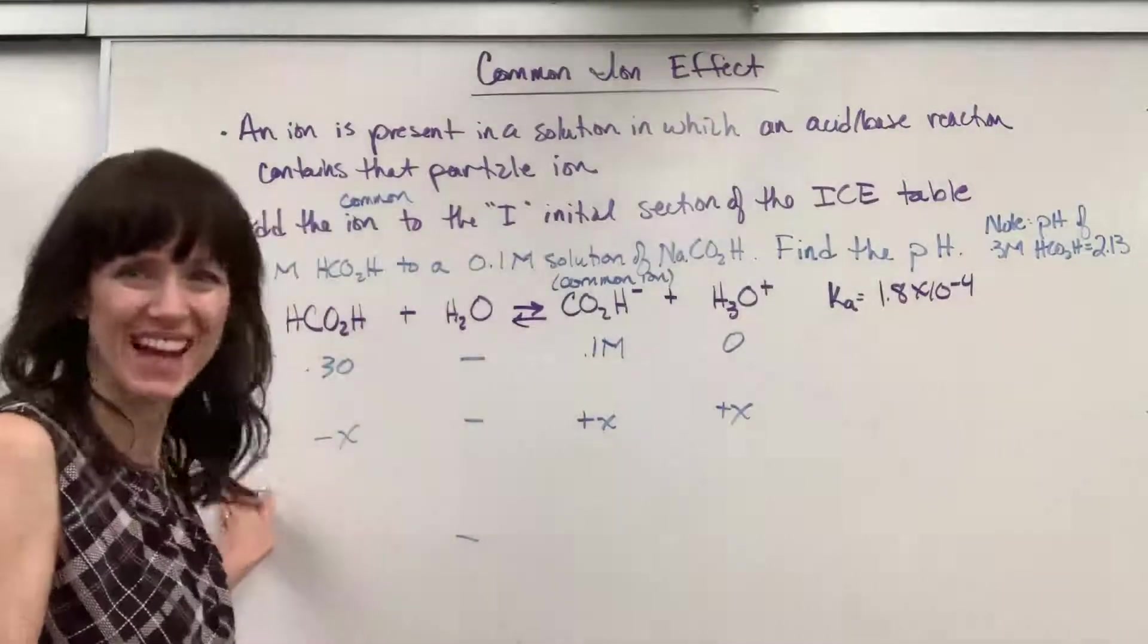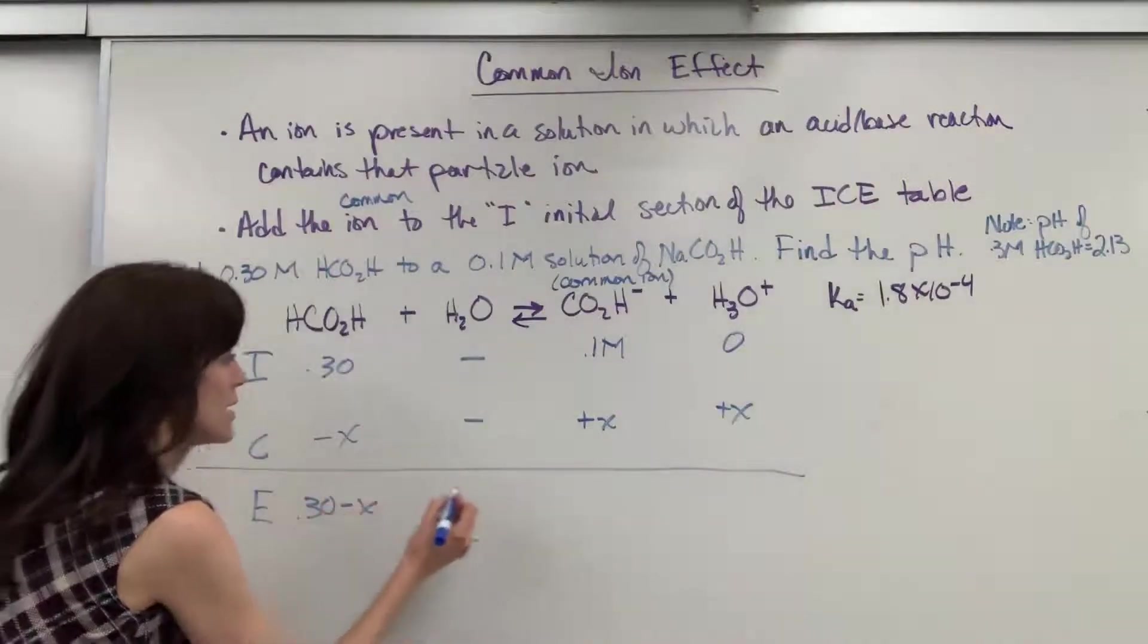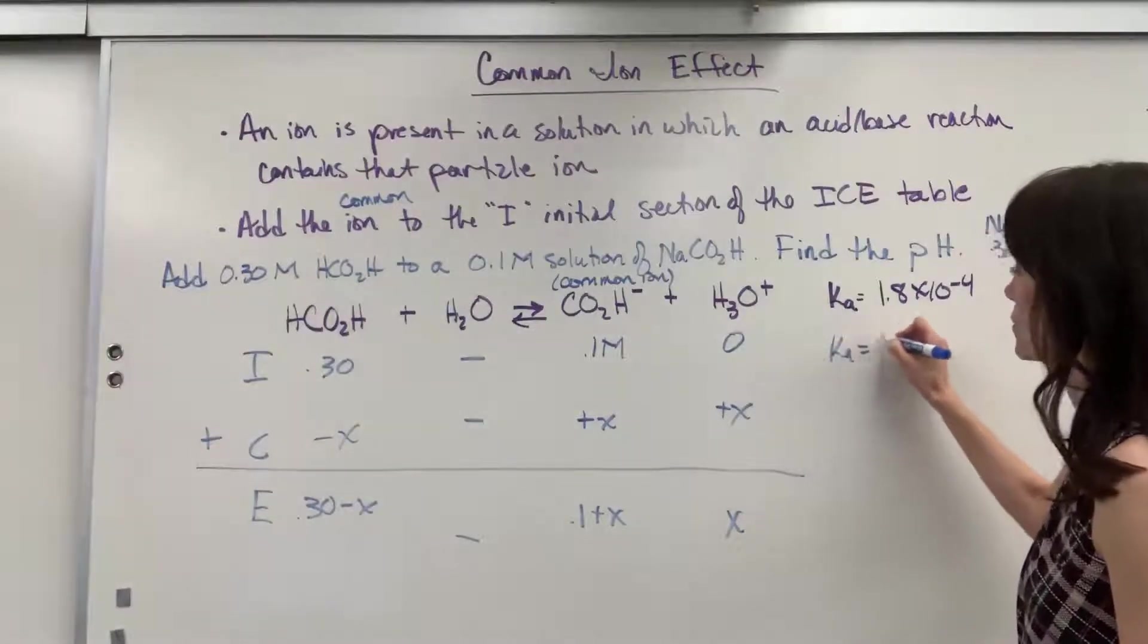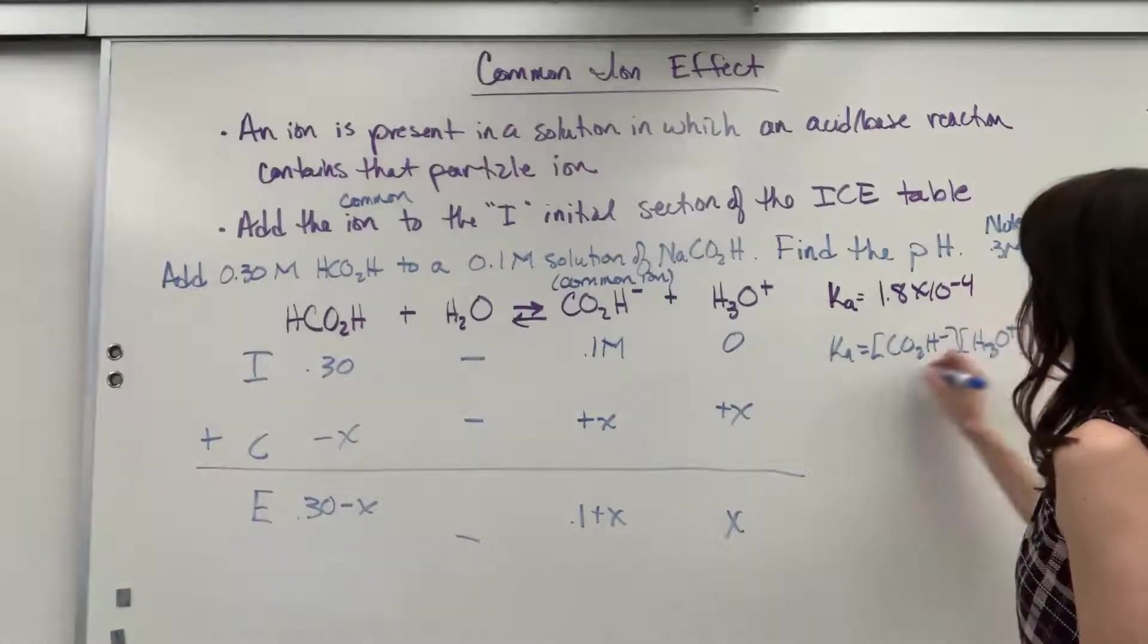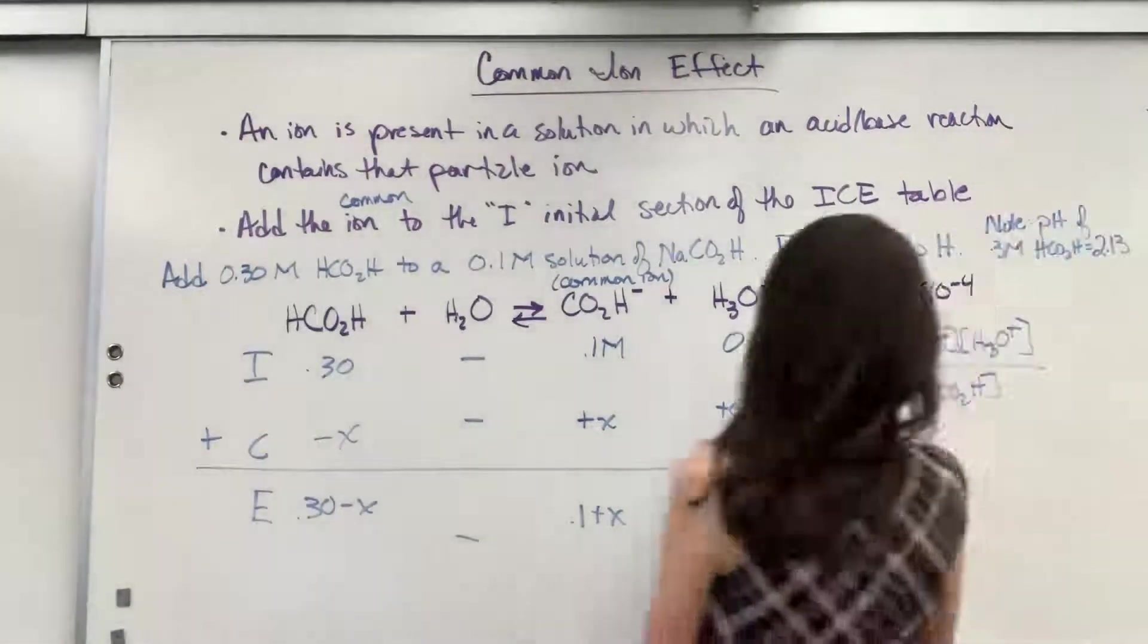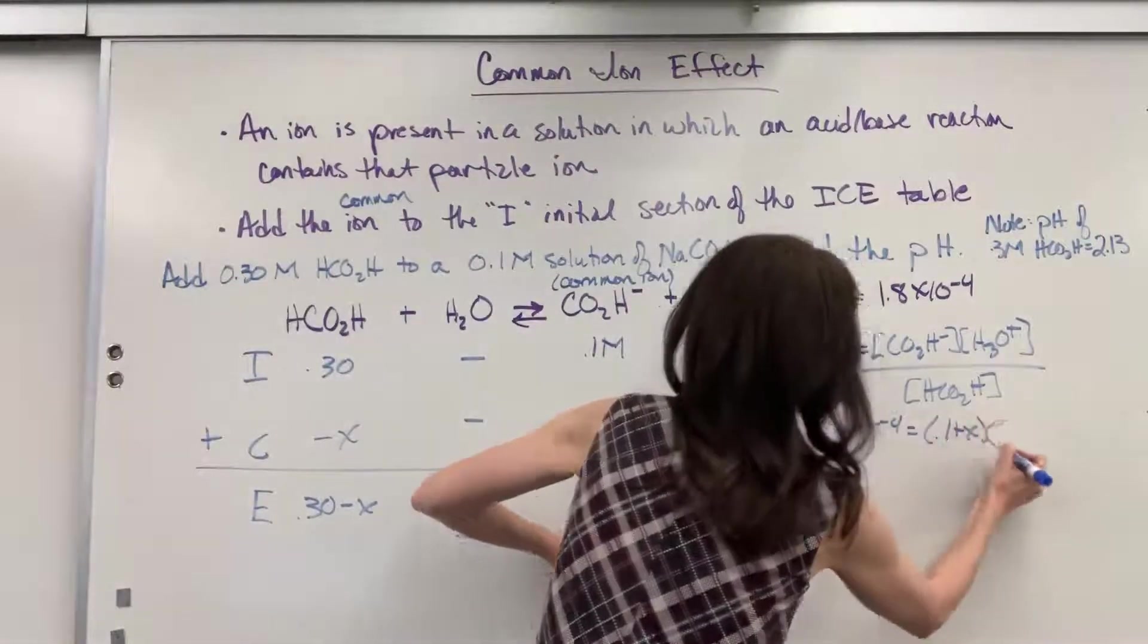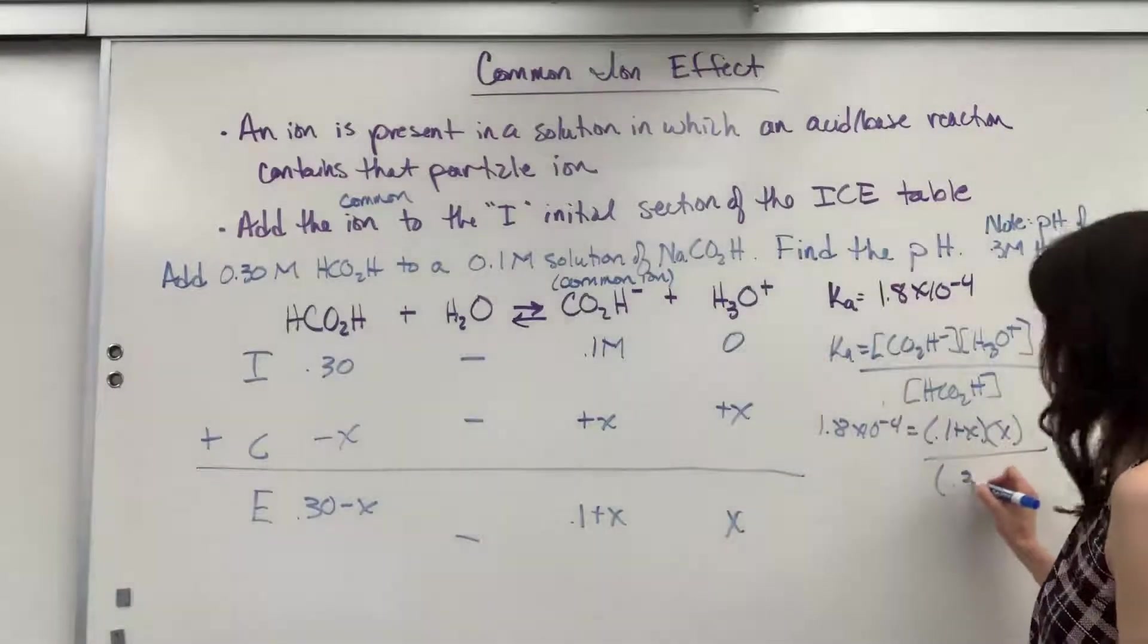Okay, remember E, just add I plus C. So let's add this up. We'll get 0.30 minus X, 0.1 plus X, and X. Let's go ahead and write our Ka expression. Ka will equal the formate ion times the hydronium ion divided by formic acid. Let's go ahead and plug everything in. We will have 1.8 times 10 to the minus 4 equals, right there, my formate ion, 0.1 plus X times hydronium is X divided by my formic acid is 0.30 minus X.